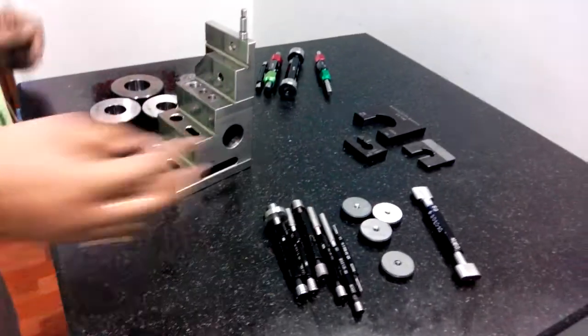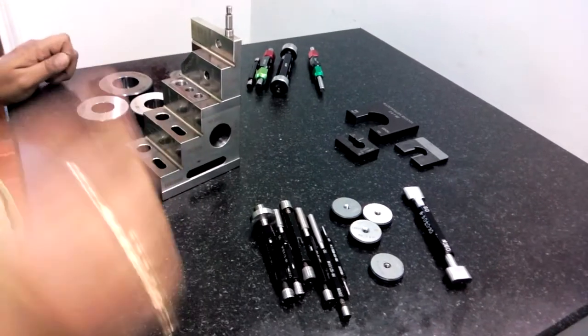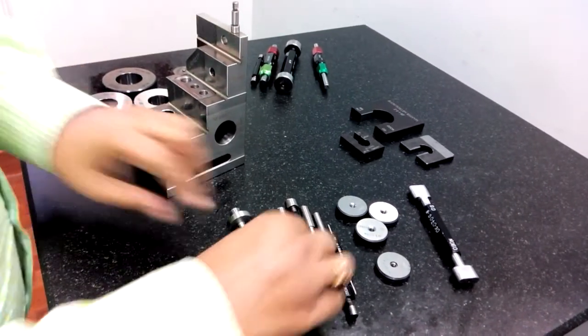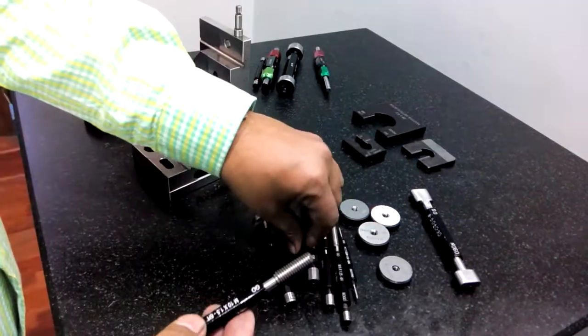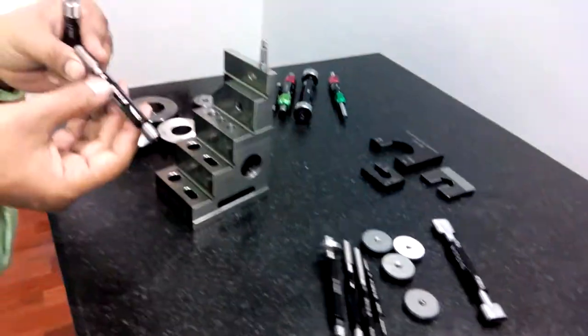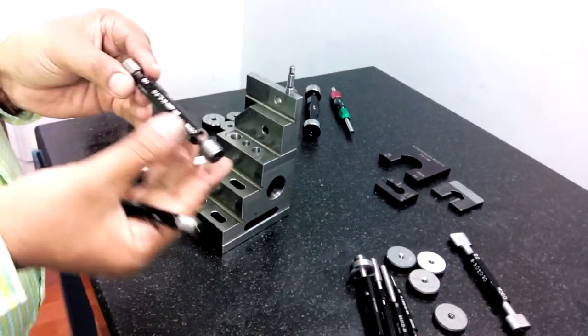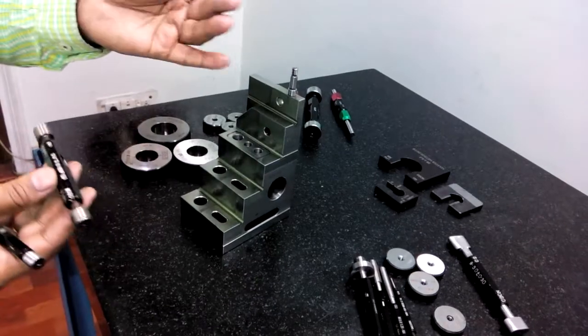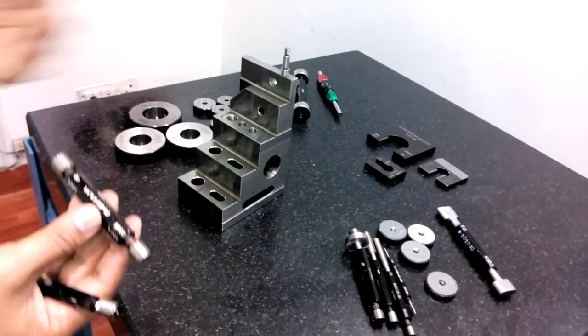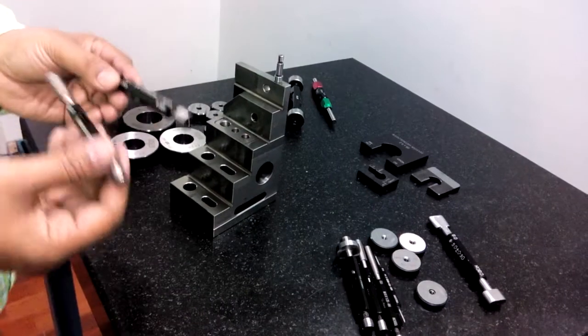In similar way, these are different kinds of thread plug gauges. In thread plug gauges, you can find threads in metric, threads in BSP, BSW, unified - there are several types of threads which are commonly used in engineering work.